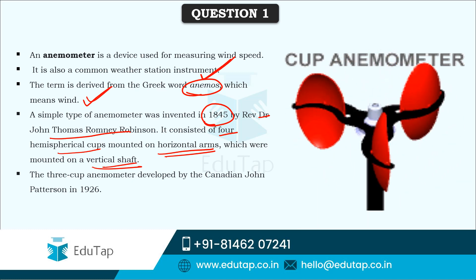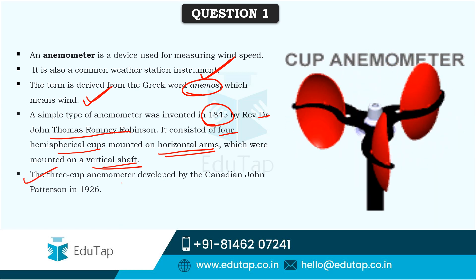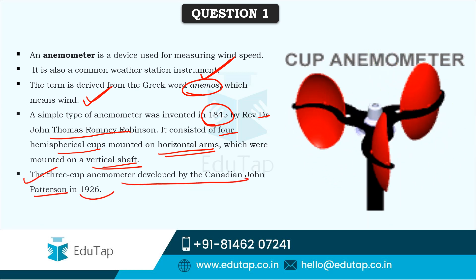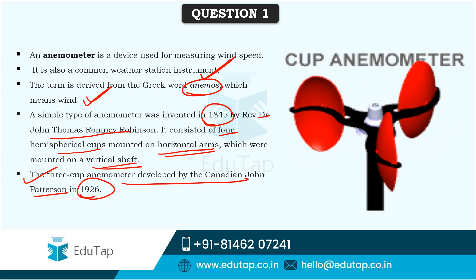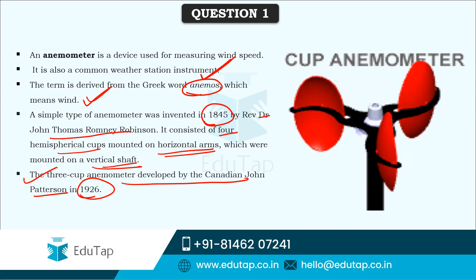The three-cup anemometer was developed by Canadian John Patterson in 1926 and that is the design that is mostly used currently.